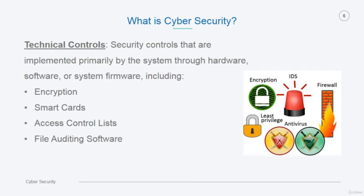The second level of security controls is the technical controls, which are implemented primarily by the system through hardware, software, or even system firmware, including encryption, smart card, access control list, and file auditing software.